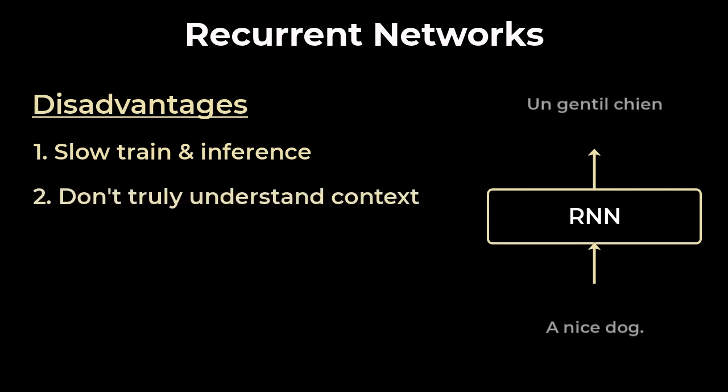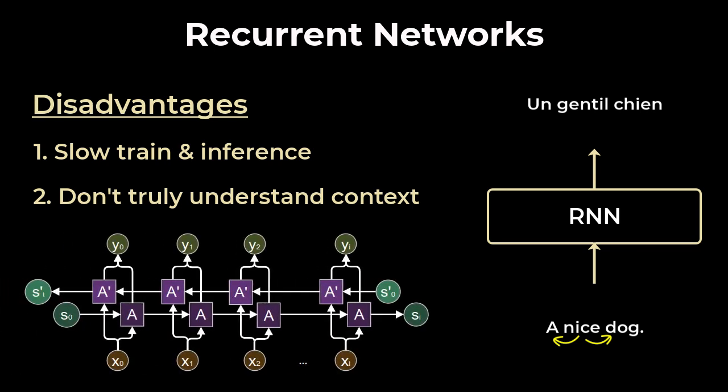RNNs also don't truly understand the context of a word. That is, they only learn about a word based on the words that come before it. But in reality, the context of a word really depends on the sentence as a whole. Now bi-directional LSTMs try to address this, but even here, the left-to-right and right-to-left contexts are learned separately and then they are concatenated. And so some of the true context is lost.